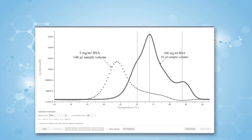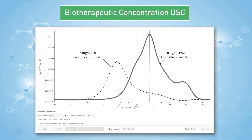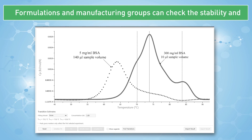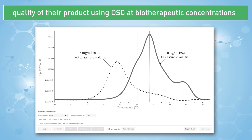The fifth new feature is known as the biotherapeutic concentration DSC. An accessory will soon be available that allows for measurements to be run at very high protein concentrations. So, for the first time, formulations and manufacturing groups can check the stability and quality of their product using DSC at biotherapeutic concentrations.